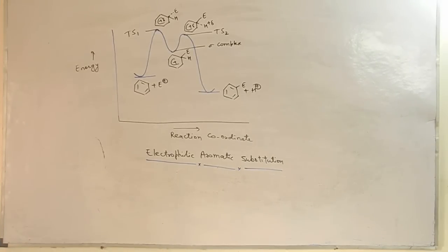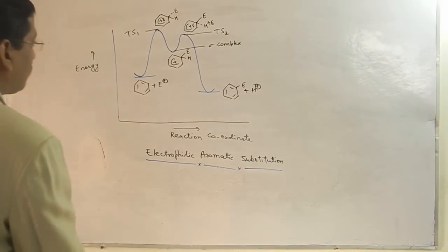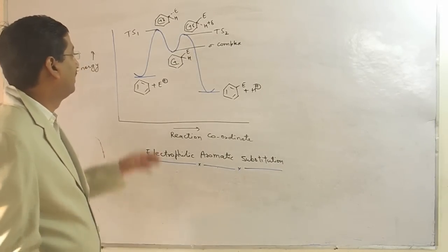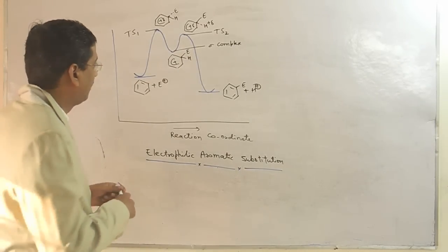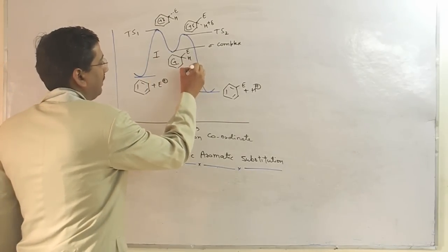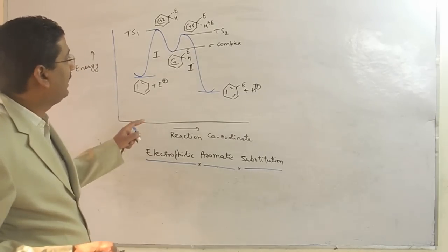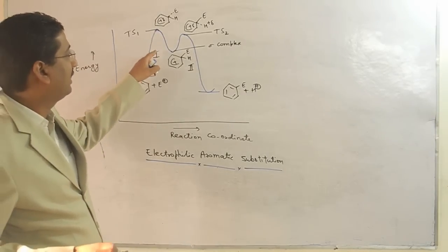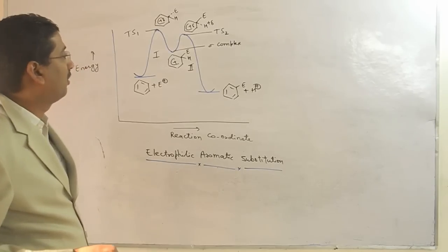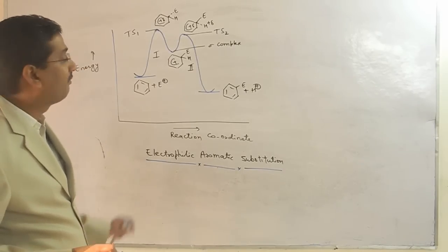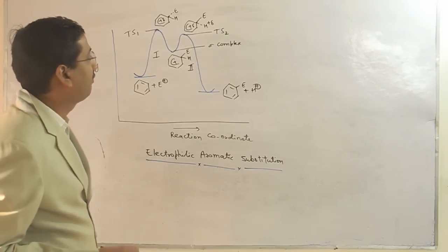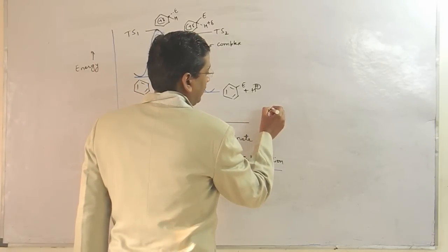So electrophilic aromatic substitution generally has an energy diagram this way. This is your first step and this is your second step. Sulfonation, you have the second step slow or the first step. This is normally a two-step reaction.